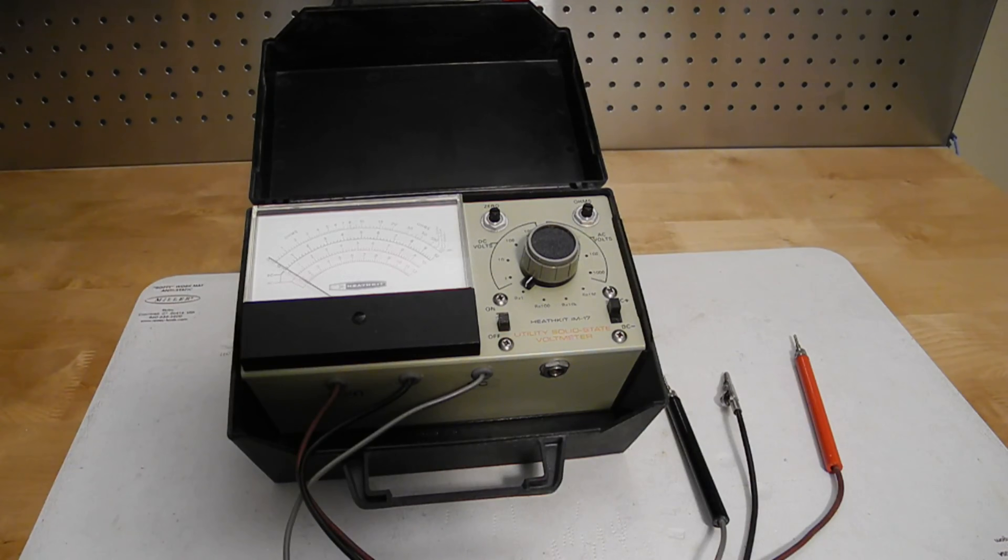I found several copies of the manual and schematic online. The manual has the usual Heathkit detailed assembly instructions. It also dedicates quite a few pages to information on the operation and use of the meter and meters in general. The manual is written assuming less knowledge of electronics by the reader than some of the other kits such as ham radio equipment.